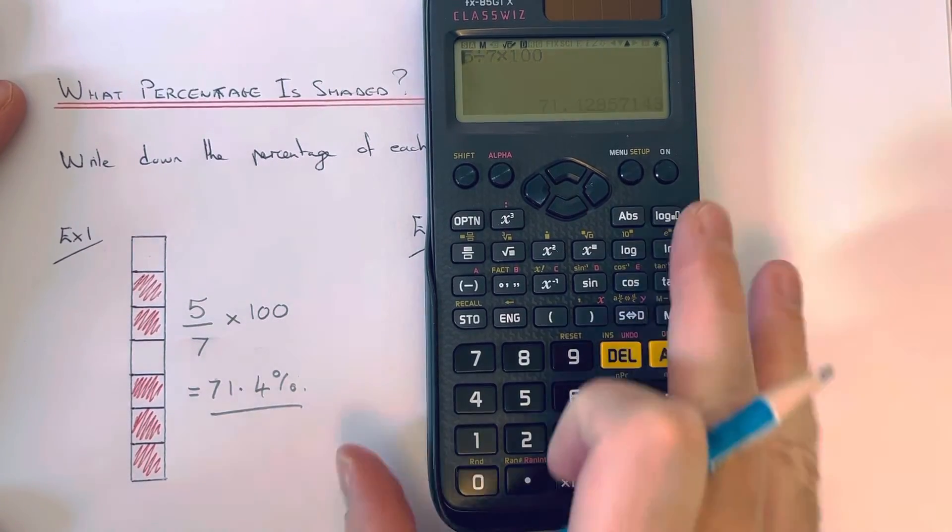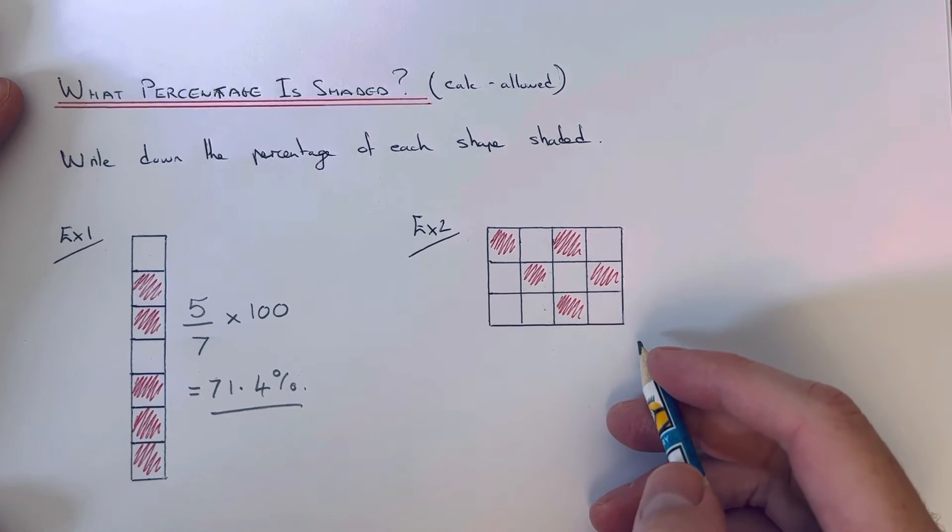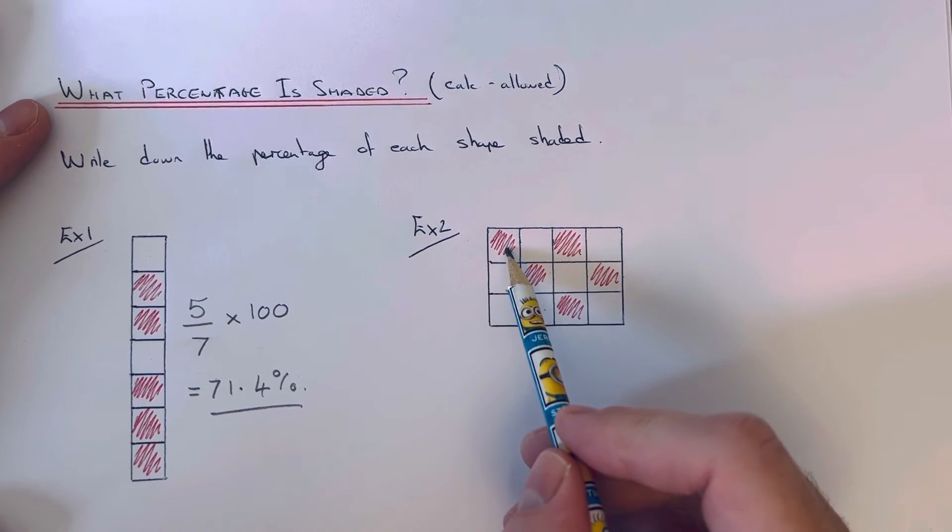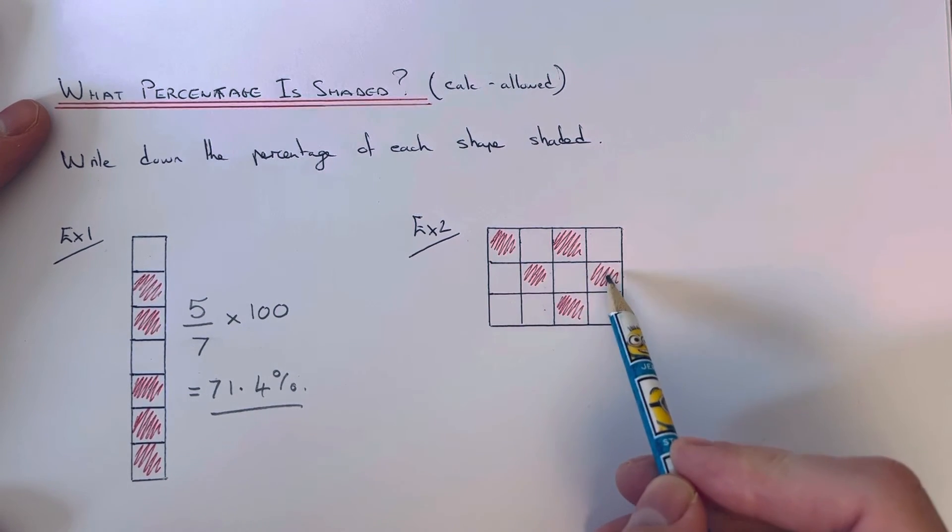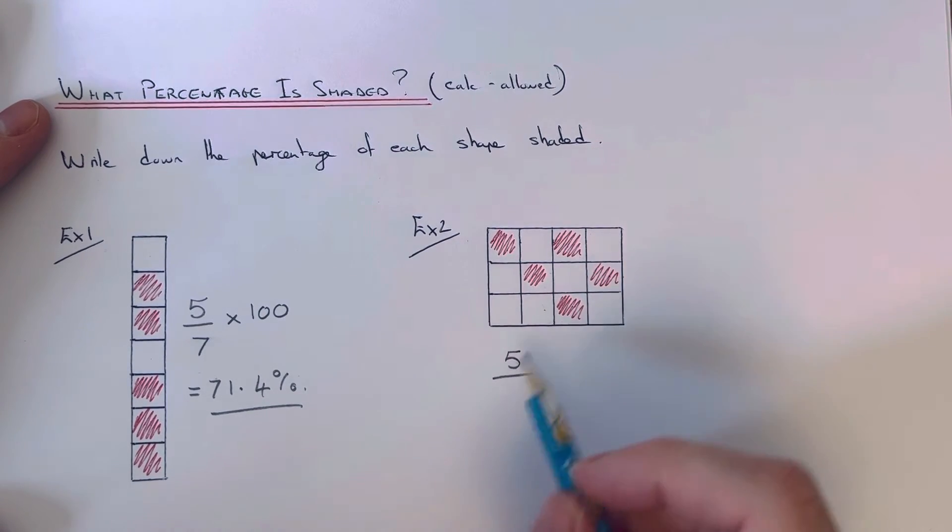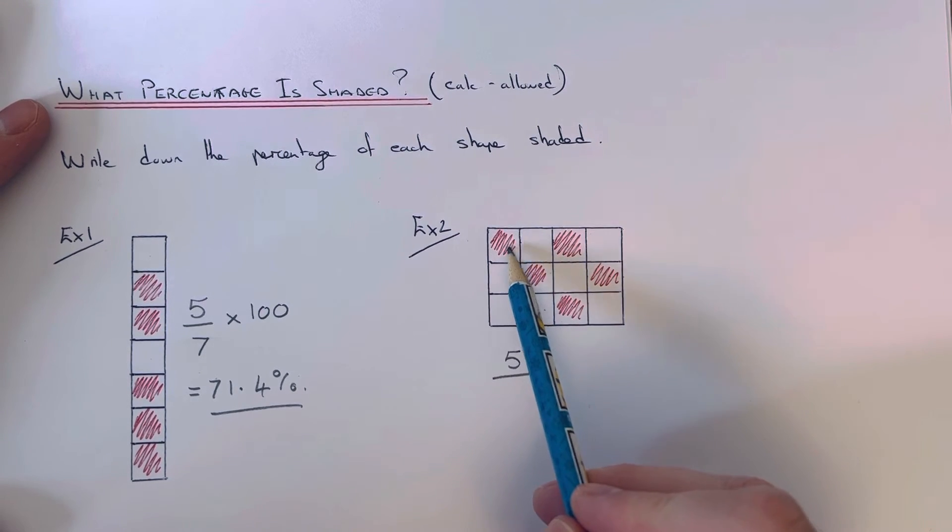So let's have a look at the second example. So again, what percentage of the shape is shaded red? So again, I'm just going to write down the fraction which is shaded red first of all. So we've got 1, 2, 3, 4, 5. So 5 squares are shaded, and then on the denominator, let me put the total: 1, 2, 3, 4, 5, 6, 7, 8, 9, 10, 11, 12.